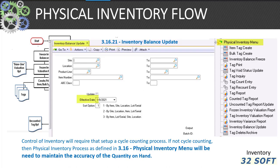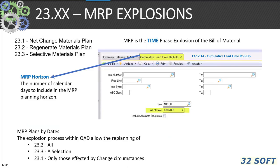Cycle counting requires intense involvement with accounting and warehousing to properly work a cycle count program. If you don't do cycle counting, you'll be forced to use the 3.16 physical inventory menu to maintain accuracy of your perpetual record. The 3.16.21 inventory balance update denotes the effective date of that count process.